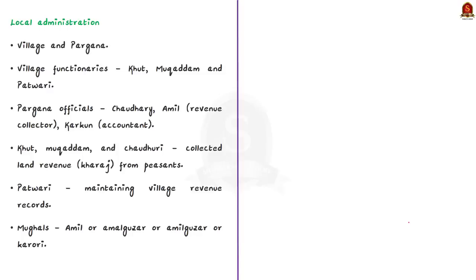In local administration, a group of villages formed a Pargana. Village and Pargana were independent yet interrelated units of administration. Important village functionaries were Khut, Mukaddam and Patwari. Important Pargana officials were Chaudhary, Amil and Kirkon. Among these, Khut, Mukaddam and Chaudhary collected land revenues called Kharaj from the peasants on behalf of the state, and deposited the same with the officials of the Diwani Vizarat, that is the finance department.